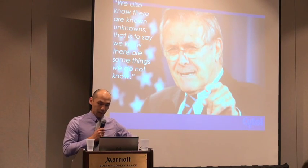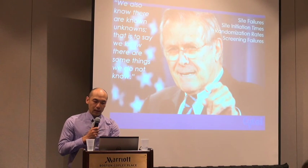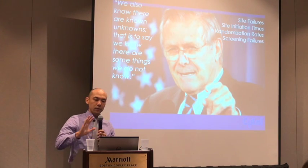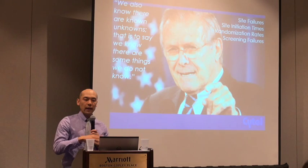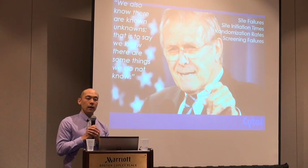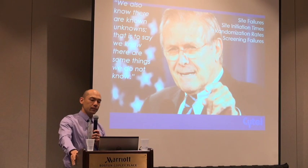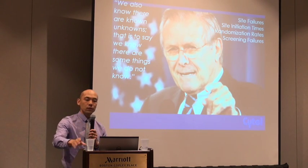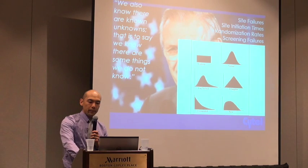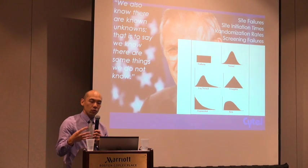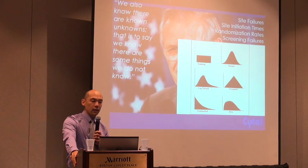But we also know there are known unknowns — things we know we do not know. These include things like site failures, initiation time, and randomization rates. We don't know these things perfectly, but we can put bounds on them. We don't know ahead of time which site will fail to recruit any patients, but we know from previous experience that a certain proportion will. Similarly with site initiation times — we know from experience that sites will open within some window, and that window may differ across countries or regions. Any decent simulation tool will give you access to statistical distributions that allow you to quantify and formalize your uncertainty about these known unknowns.